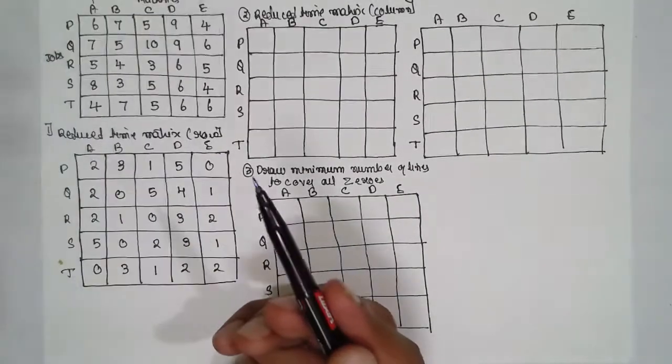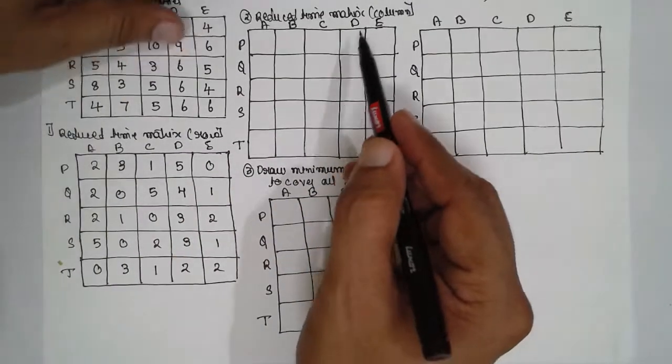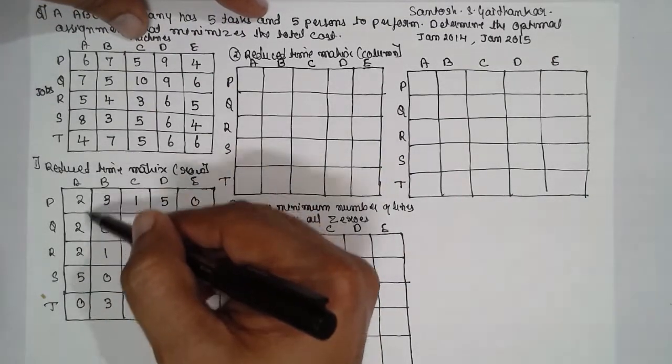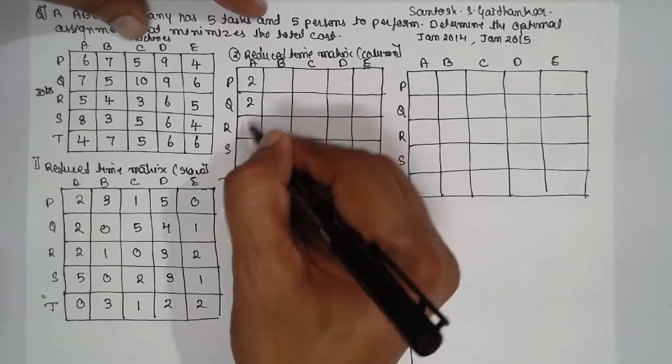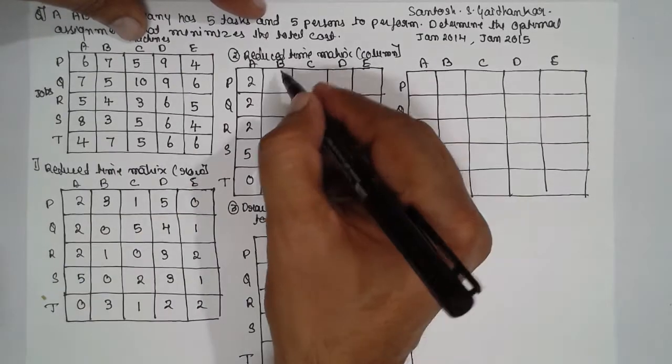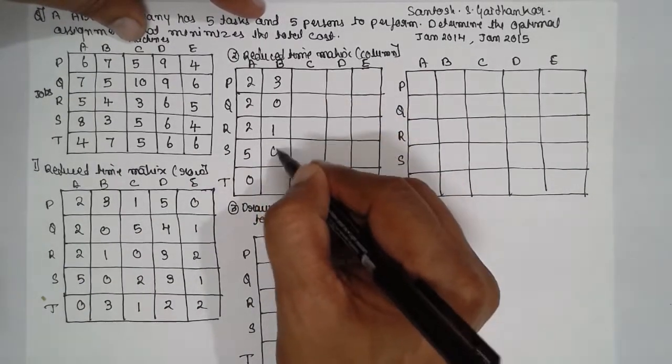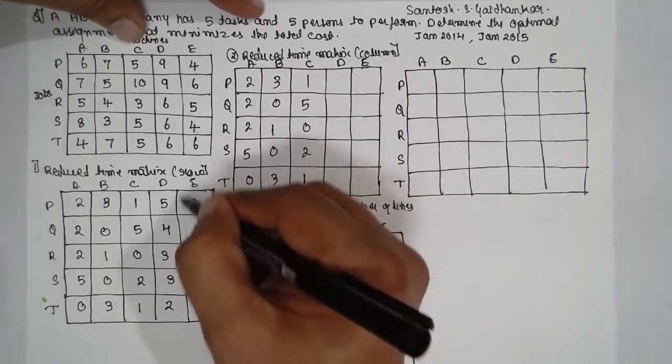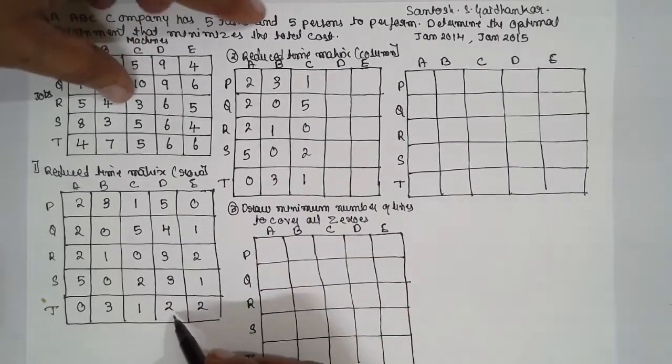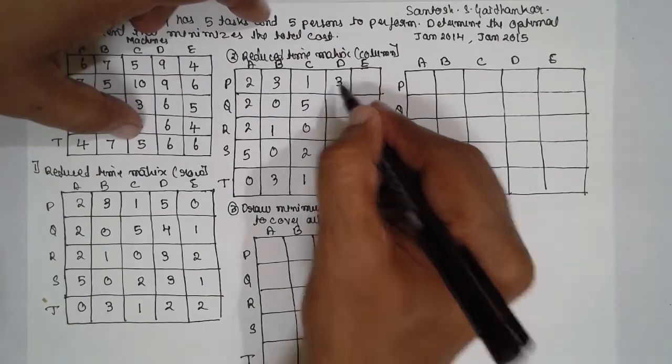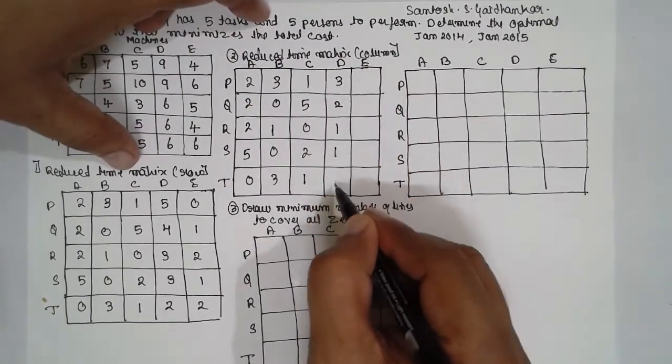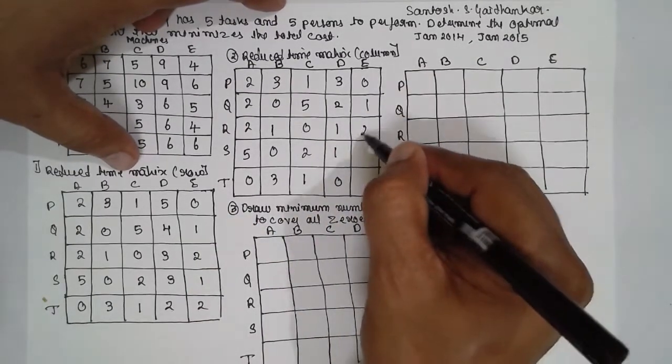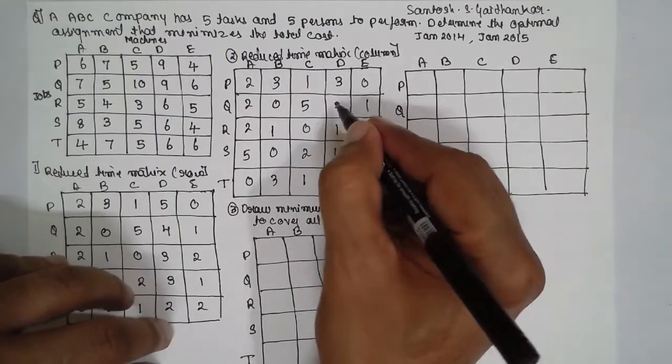We have reduced row 1, now we have to reduce column-wise here. Column-wise there is a 0, the smallest is 0, therefore we have to keep these values. We reduce the values as is: 2, 2, 2, 2, 5, and 0. There is a 0, therefore write the values as is. Again there is a 0: 1, 5, 0, 2, 1. There is no 0 term. The 2 is the minimum. 5 minus 2 is 3, 3, 2, 1, 1, 1, 0. 0 is there, write as is: 0, 1, 2, 1, 2. This is the 2 value.